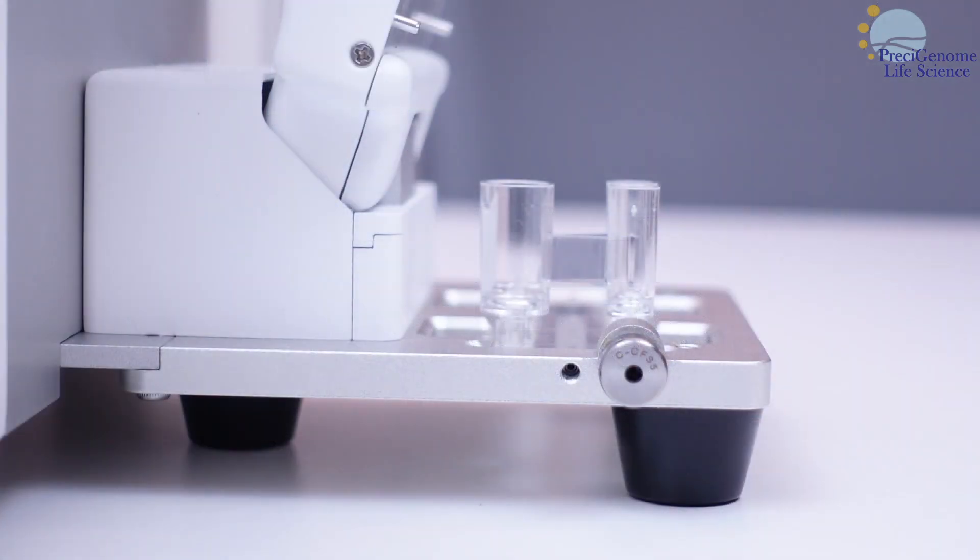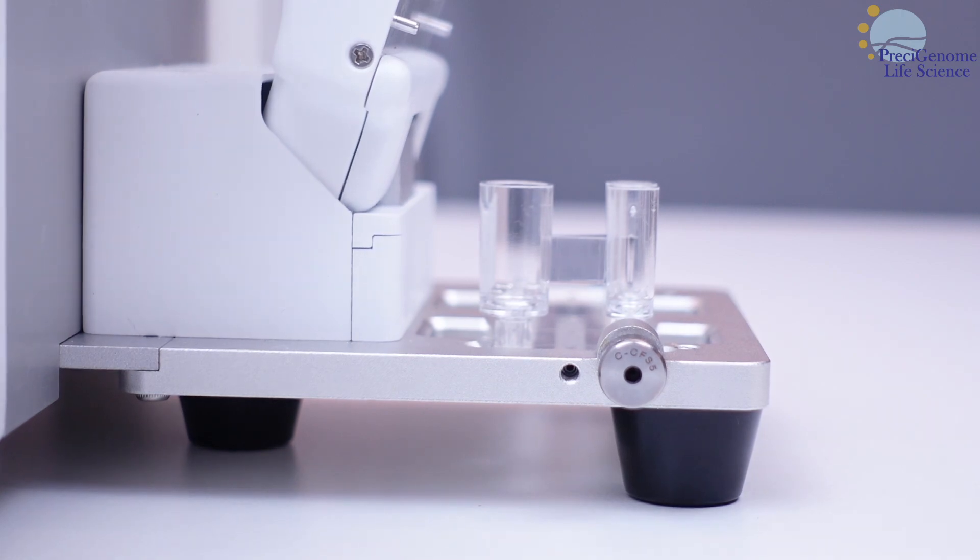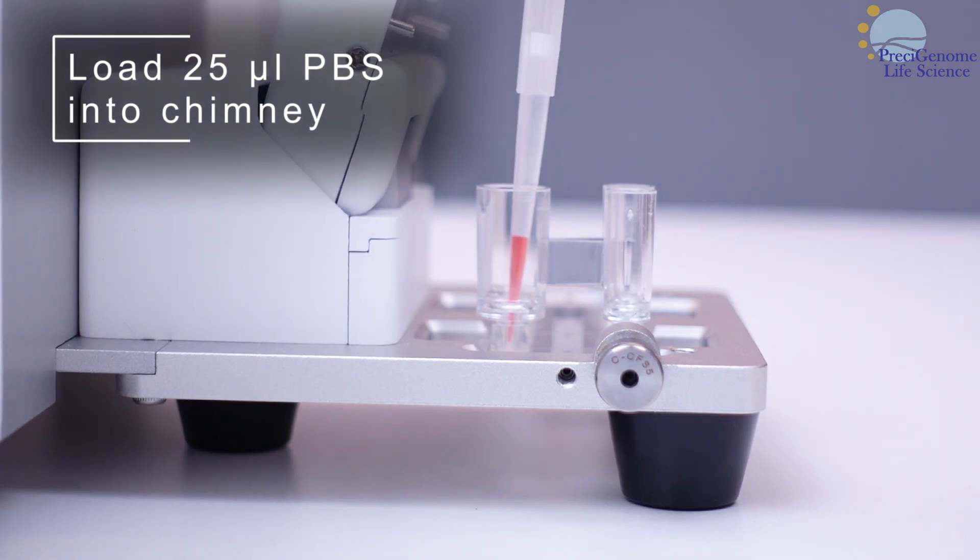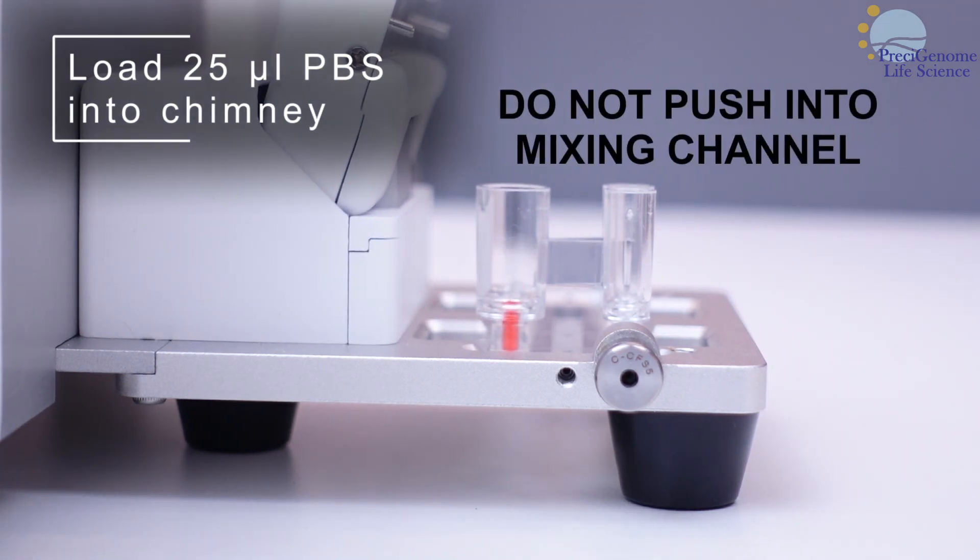When loading the reservoirs, first conduct inline dilution in the collection reservoir's chimney. For this, 25 microliters of aqueous buffer is sufficient, regardless of production volume.